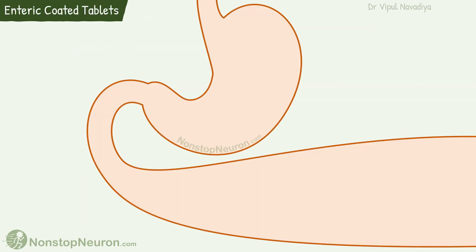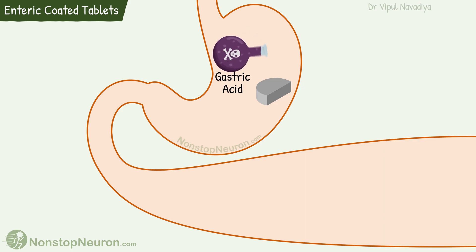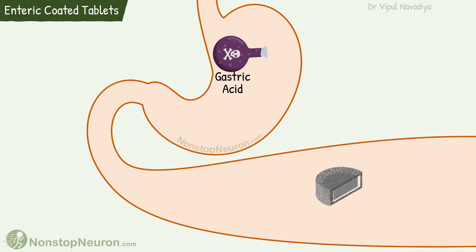Next, enteric-coated tablets. In the previous video, we saw that gastric acid destroys certain drugs and therefore certain drugs are not effective when given orally. Enteric-coated tablets are the solution to this problem. In such tablets, there is an outer coating on the tablet. It prevents the degradation of the drug from gastric acid when it is in the stomach. In the intestine, this coating gets dissolved and the drug from the inner core is absorbed. In this way, we can give acid-labile drugs by oral route.